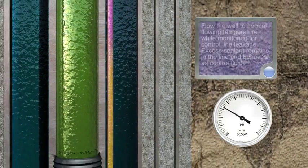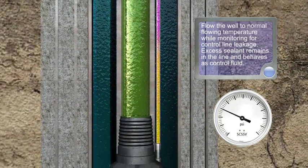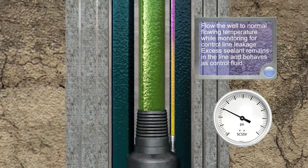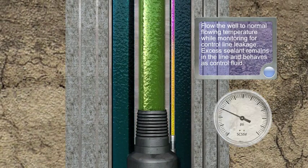Flow the well to normal flowing temperature while monitoring for control line leakage. Excess sealant remains in the line and behaves as control fluid.